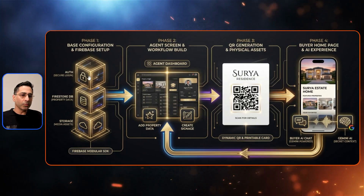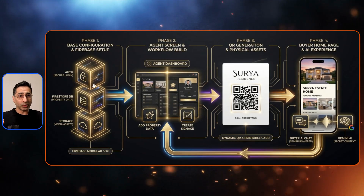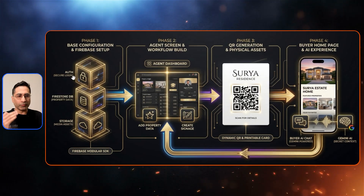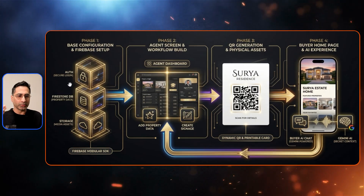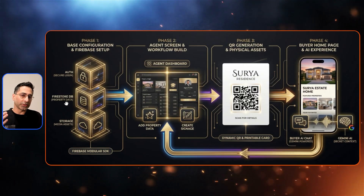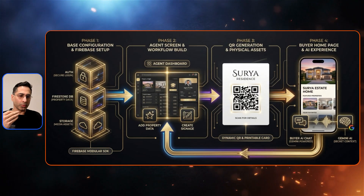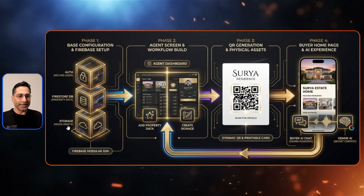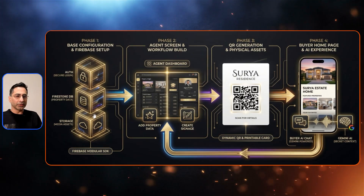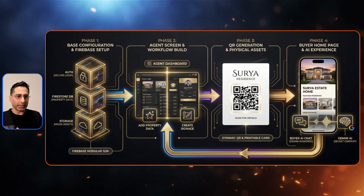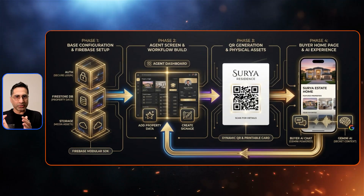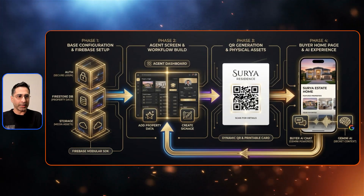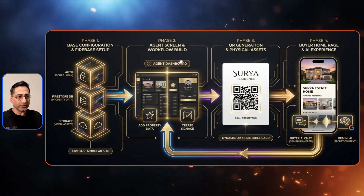The first phase is to set up the Firebase configuration — the backend side. Firebase is where you will set up authorization, the Firestore database to store data and credentials, and optionally media asset storage. This is the foundational setup you do outside of AI Studio. Once everything is ready, you move to phase two in AI Studio.